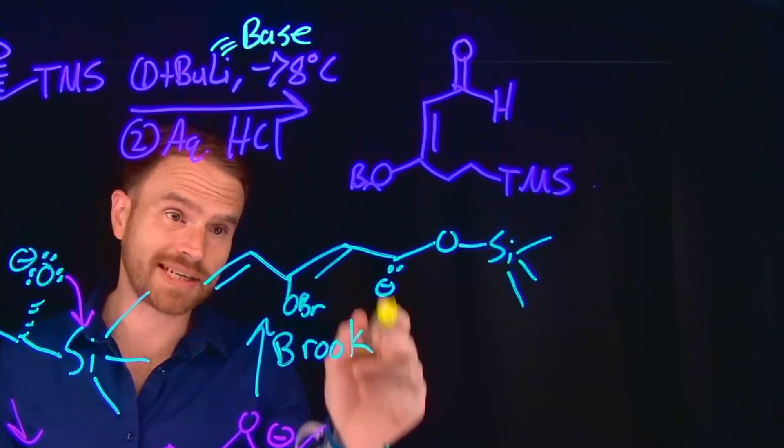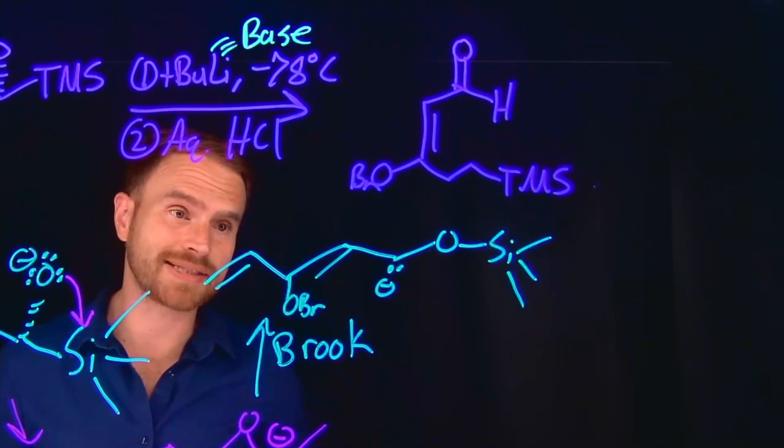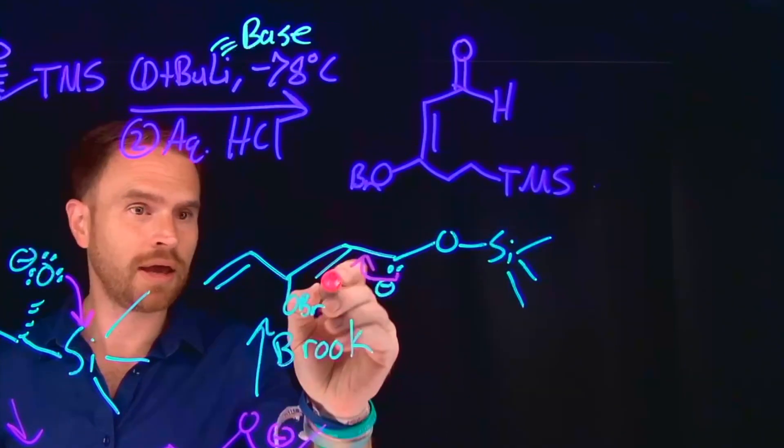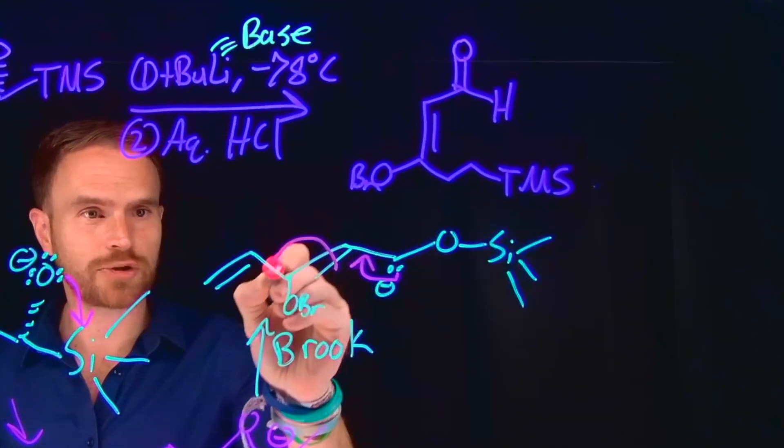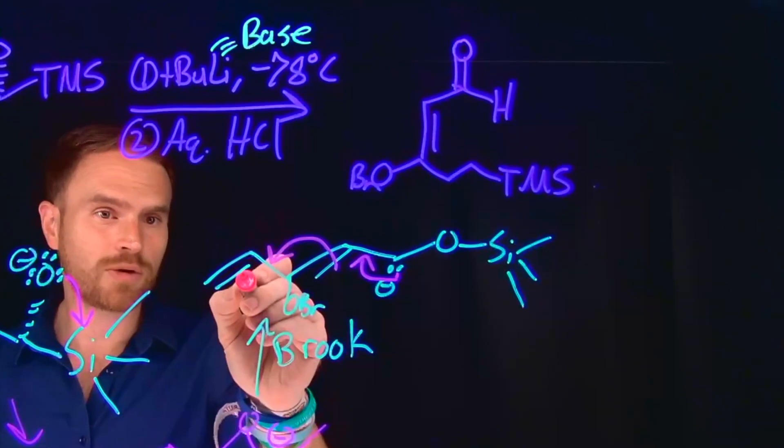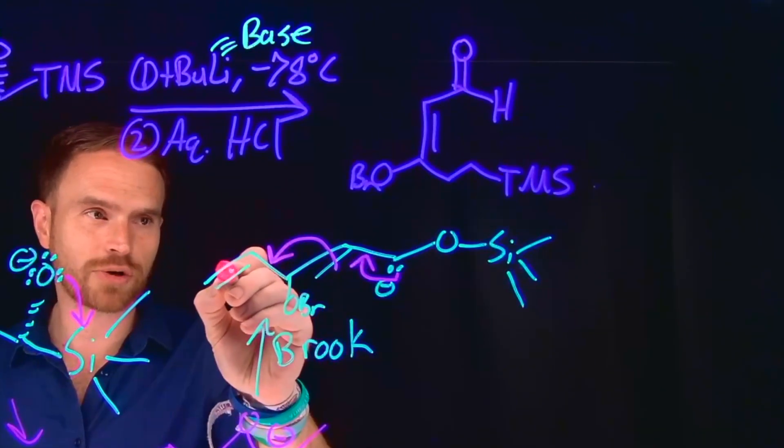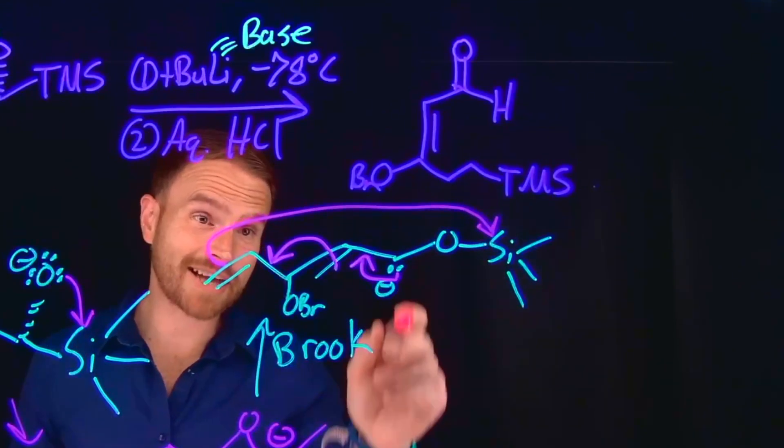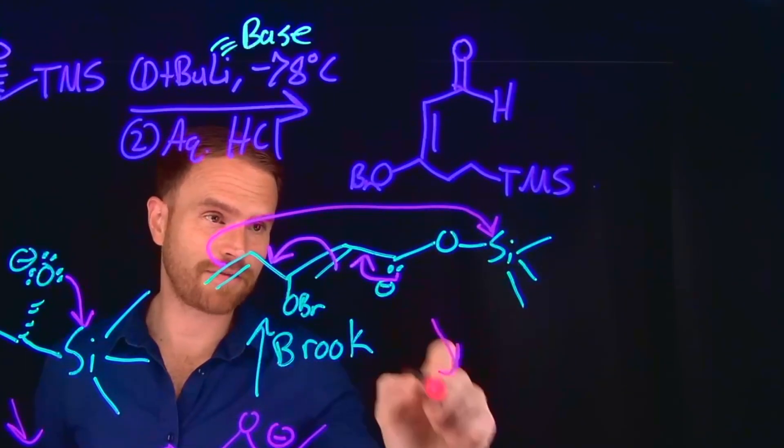And since these are delocalized pi electrons now, what can happen is that this lone pair of electrons can come down to form an alkene, which is going to kick over these pi electrons to locate it at this position, which is going to allow us to use these pi electrons to come and actually do an attack on this silicon. And this is actually going to close a ring that contains seven members.